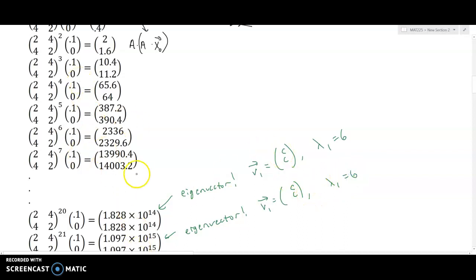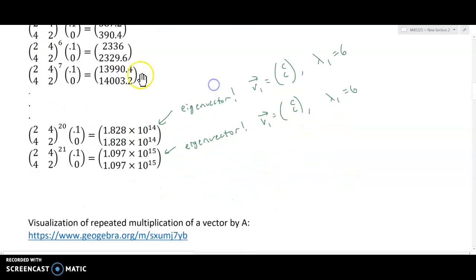And again, it looks like those components are the same, which corresponds to a lambda of six. Now, so it seems to be the case that the vectors are rotating into the direction. So we'll just kind of make an observation here. The vector after repeated multiplications, repeated multiplications by A seem to rotate the vector in the direction of V1.